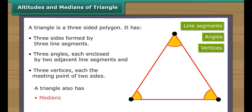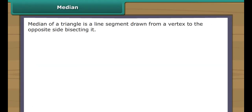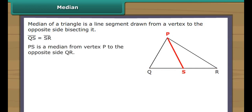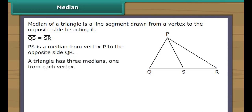Median. A median of a triangle is a line segment drawn from a vertex to the opposite side, bisecting it. In the figure, line segment PS is drawn from vertex P to the opposite side QR. It divides QR into two equal halves. Therefore PS is a median from vertex P to the opposite side QR. A triangle has three medians, one from each vertex.